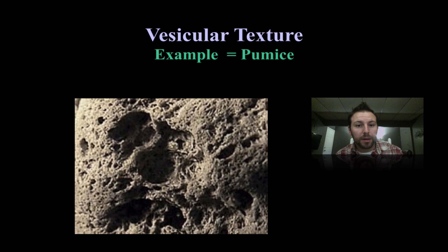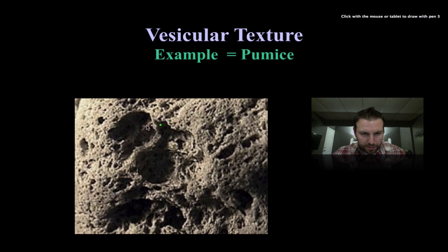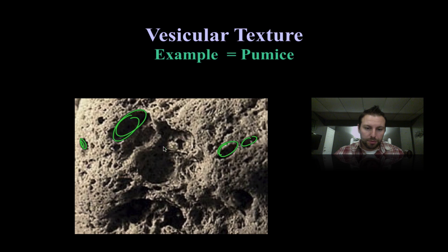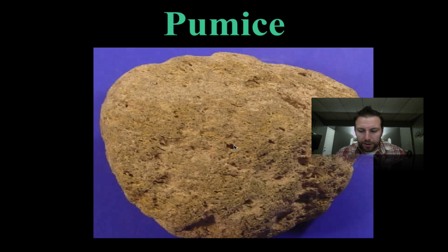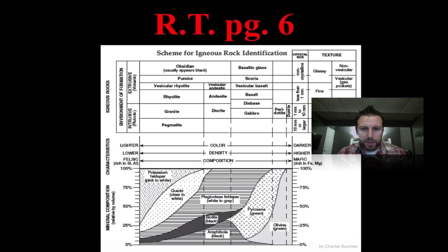Here's pumice again — notice the gas pockets inside of it. Some big gas pockets, some smaller ones. You'll see in class all different types. Looking at it a little further out, we can see all these pockets that are in here. Back on to page six.